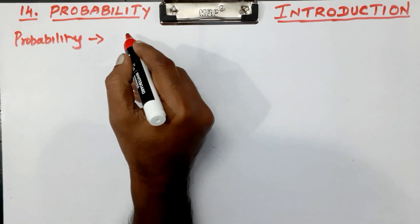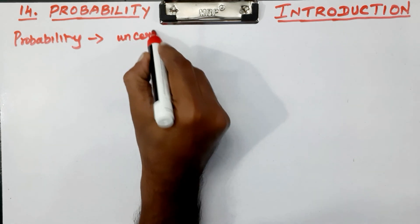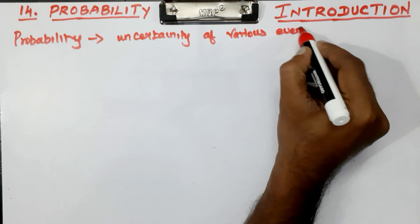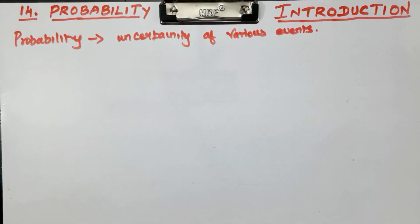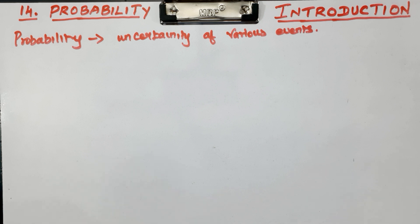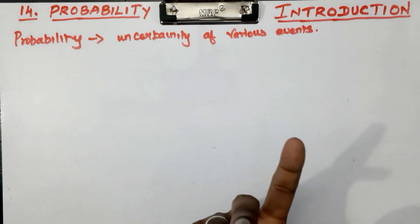Probability deals with uncertainty of various events. For example, consider cards. The total number of cards is 52. These are playing cards. If you pick any card from 52 cards, you could get a king. There are 4 types of kings - king of hearts, spades, clubs, and diamond.